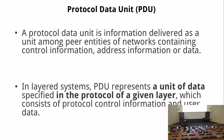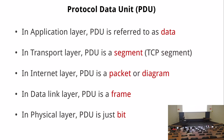Data sent at different layers is given different names — they are all called Protocol Data Units. At the application layer we call the unit data; at the transport layer (TCP) it's a segment; at the internet layer it's a packet or datagram; at the data link layer it's a frame; and at the physical layer it's just bits.